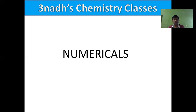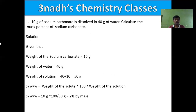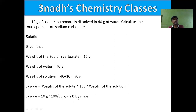Problem 1: 10 grams of sodium carbonate is dissolved in 40 grams of water. Calculate the mass percent of sodium carbonate. Given: weight of solute (Na₂CO₃) = 10 g, weight of solvent (water) = 40 g. Weight of solution = 40 + 10 = 50 g. Mass percent = (weight of solute / weight of solution) × 100 = (10/50) × 100 = 20 percent by mass.